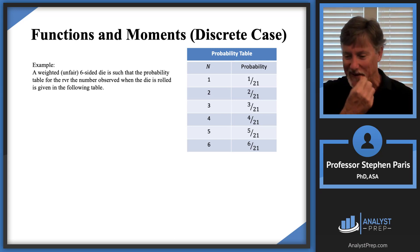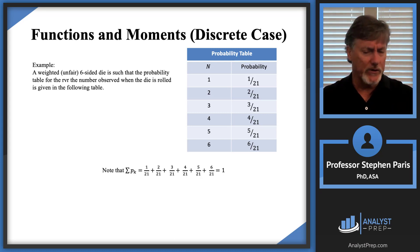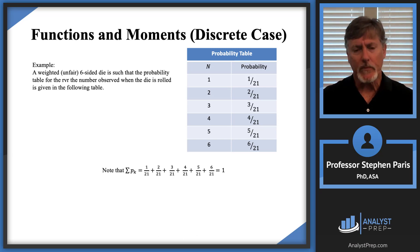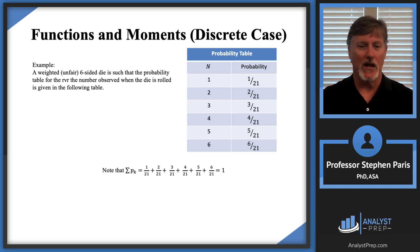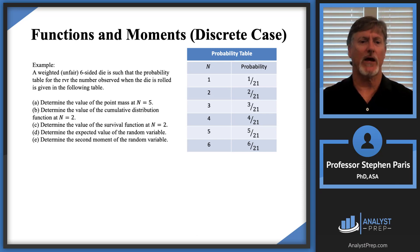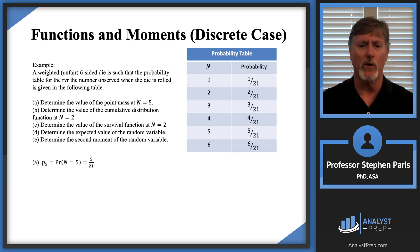One thing I found myself doing when given a probability table on an exam is verifying it by adding up all the probabilities to confirm they sum to one. They do in this case. On the actual exam, if they tell you it's a probability table, you don't really need to go through and verify that — it's a waste of time. Now let's answer questions about functions and moments. Part A: determine the value of the point mass at N equals five. That's just the probability associated with N equals five, which is five out of 21.